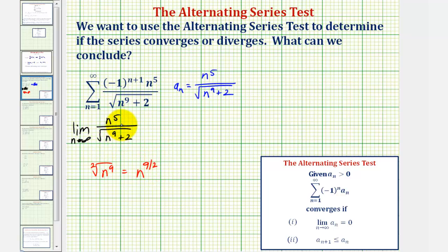So we can think of the denominator as having degree nine-halves, and the numerator has degree five. Because the numerator has a higher degree, as n approaches infinity, this quotient also approaches positive infinity. And since this limit is not equal to zero, the alternating series test doesn't apply, and the alternating series diverges by the nth term divergence test.